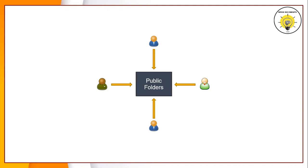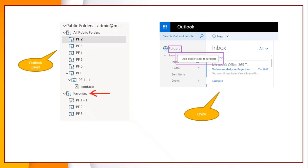Public folders are designed for shared access. They let users organize and share information with other users within the organization. Public folder content can include emails, posts, documents, and forms. Users can access public folders from Outlook client and from OWA as well. As for the permissions assigned to the users, they can browse and add the public folders within their Outlook client or OWA.